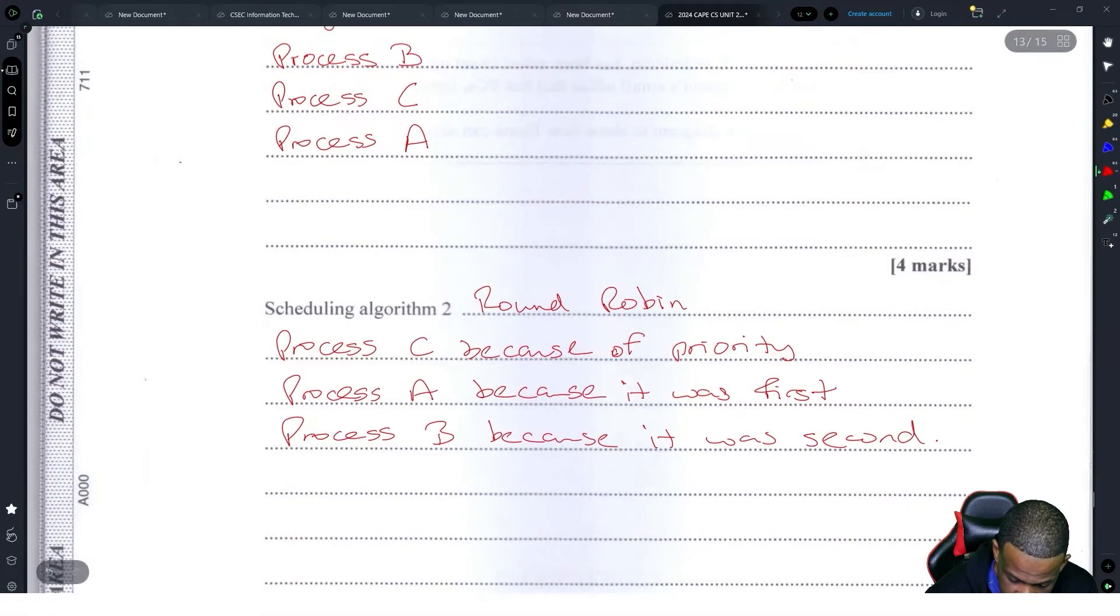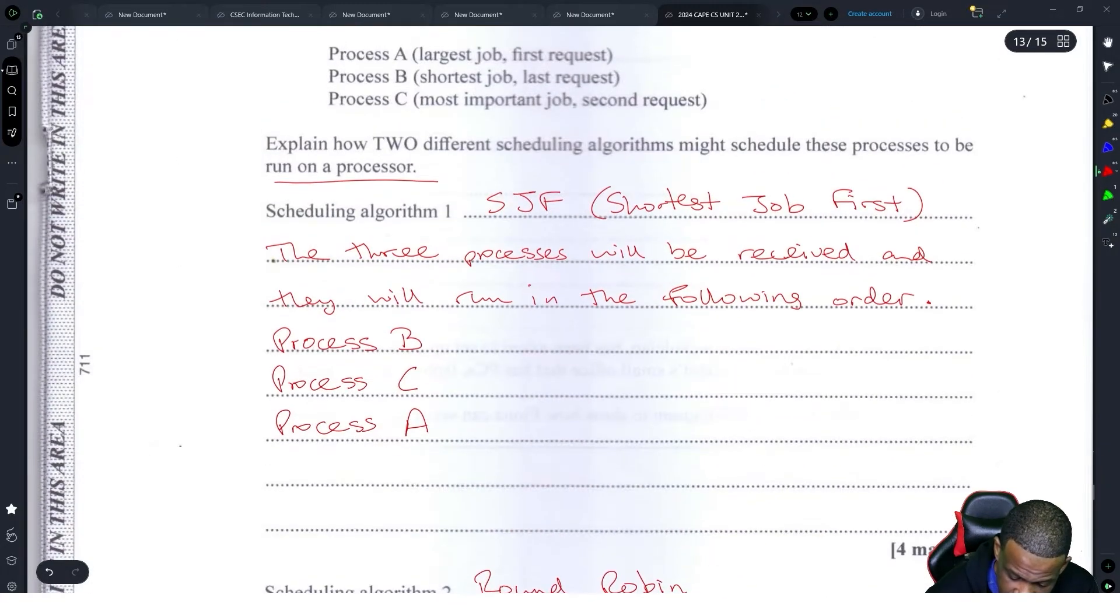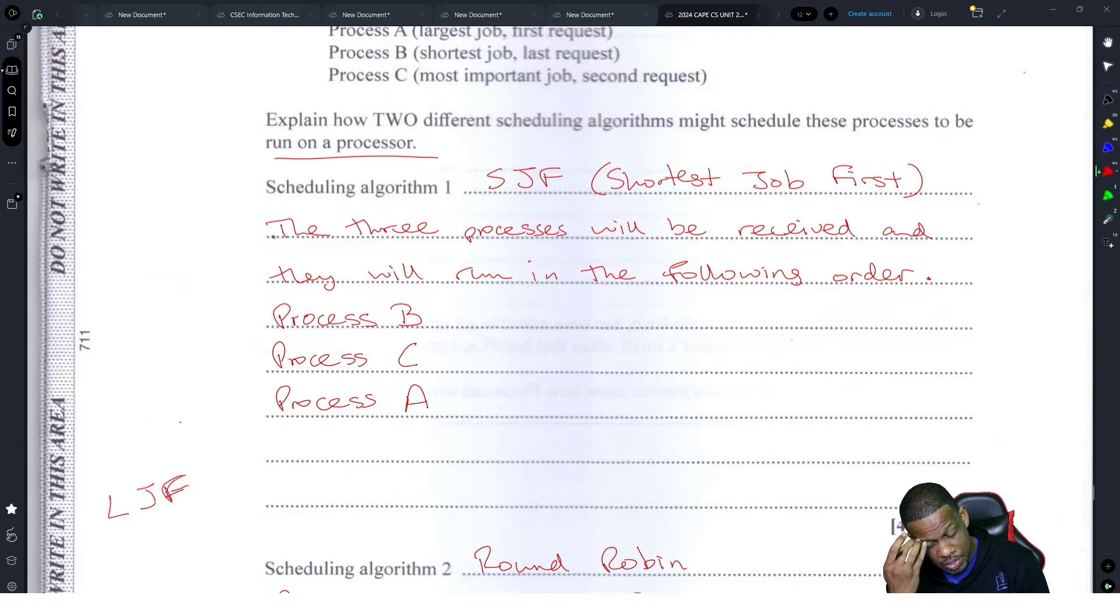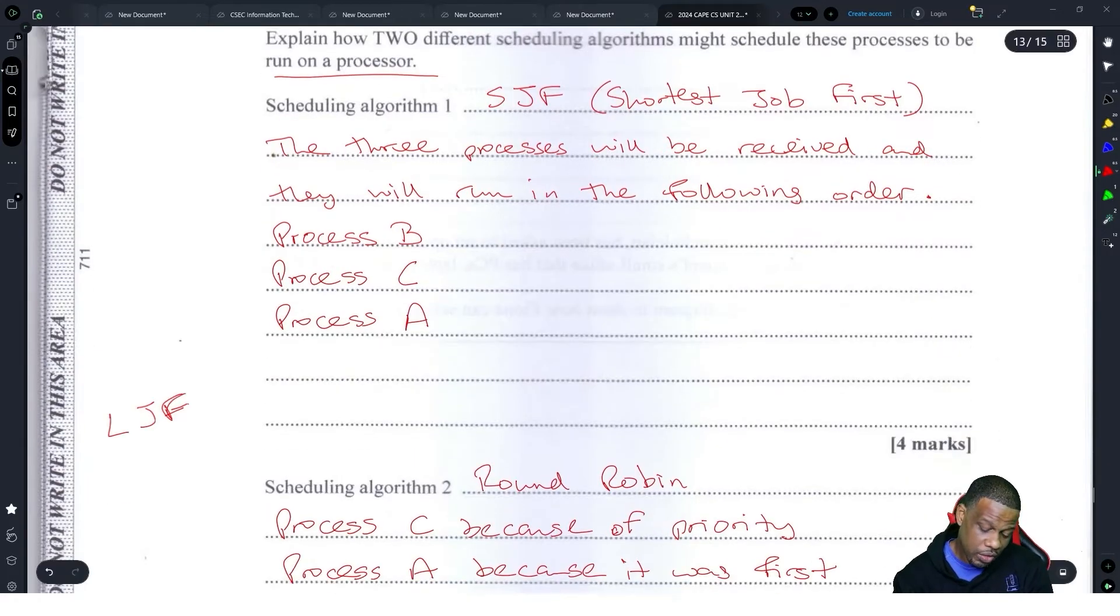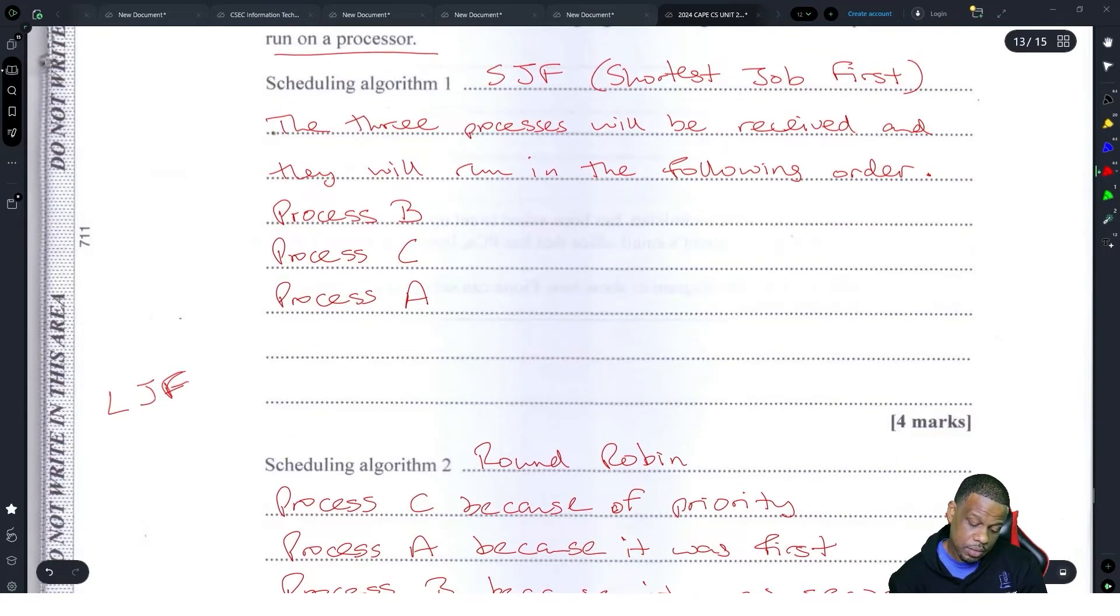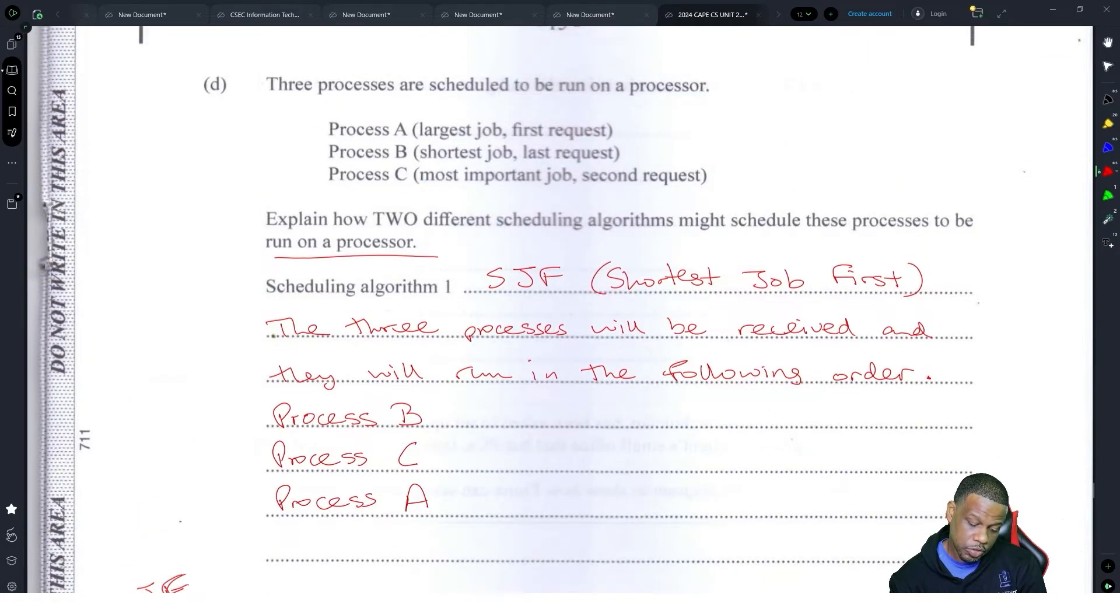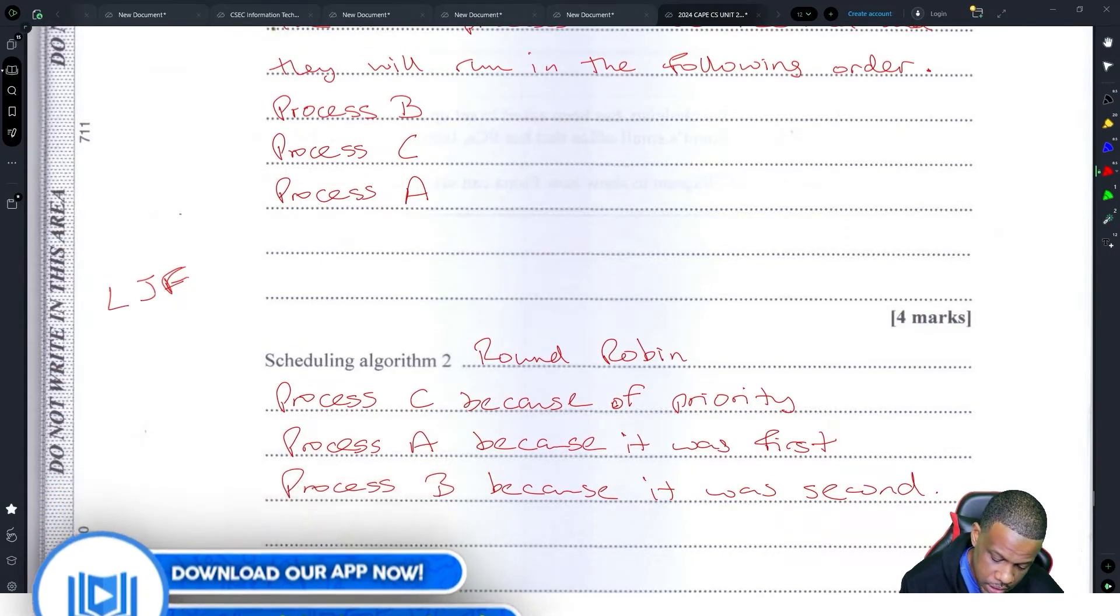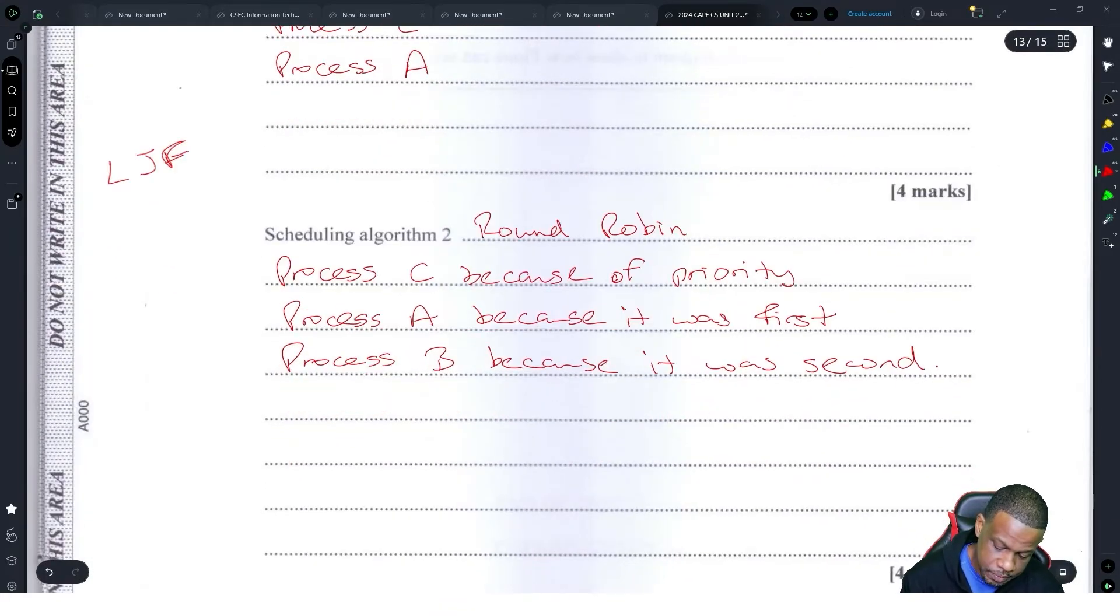So you have shortest job first and then longest job first. I guess if you use longest job first, LJF, that would be easy to do because they'll just take the longest job first. Shortest job first and longest job first don't care about any priority. Round Robin does care about priority, so the most important job will interrupt the other two. I think longest job first might be a better answer to put, but I put Round Robin just to flex.